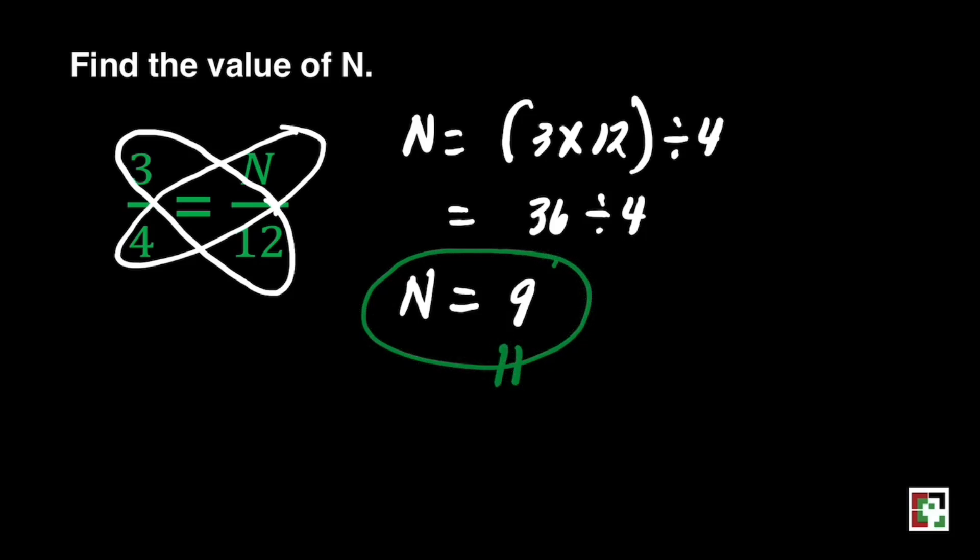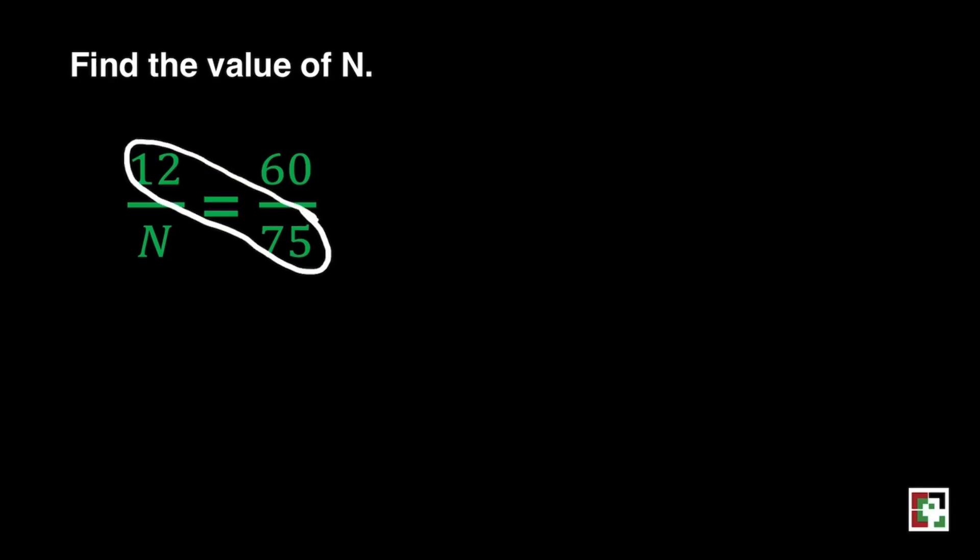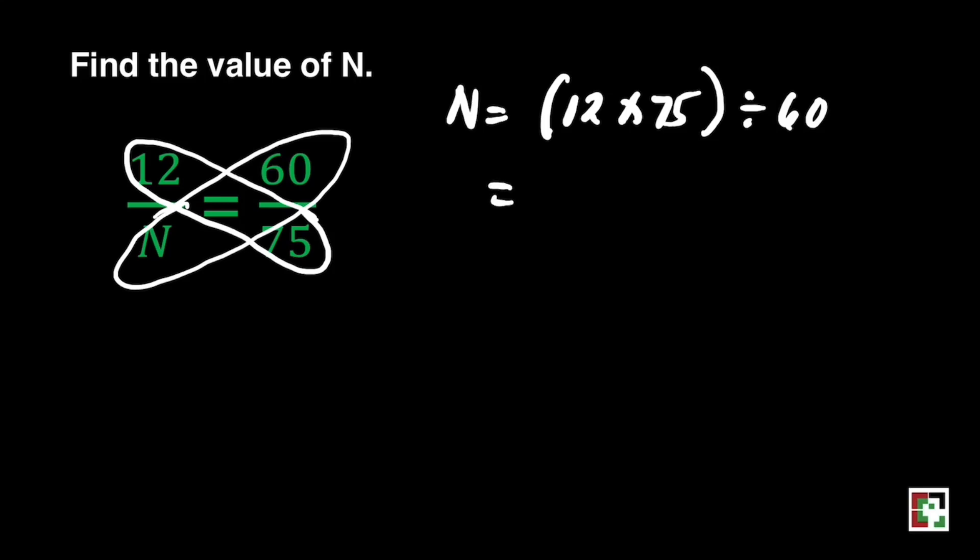Let's have the next one. We have here 12 over n is equal to 60 over 75. To get the value of n, we'll just do cross multiplication. That's 12 times 75 divided by 60.